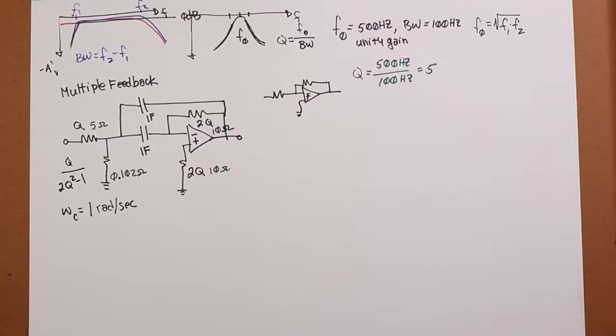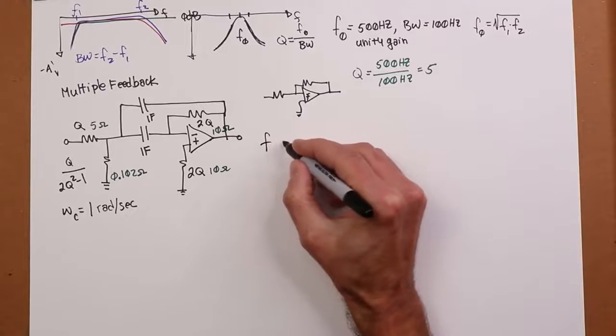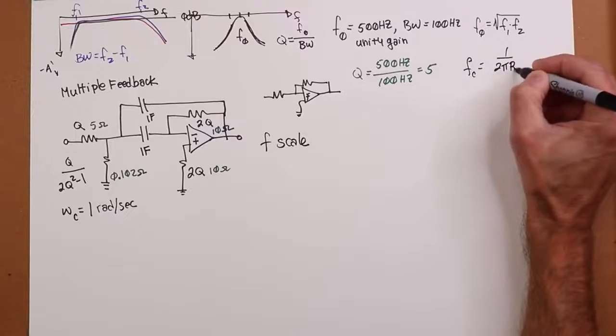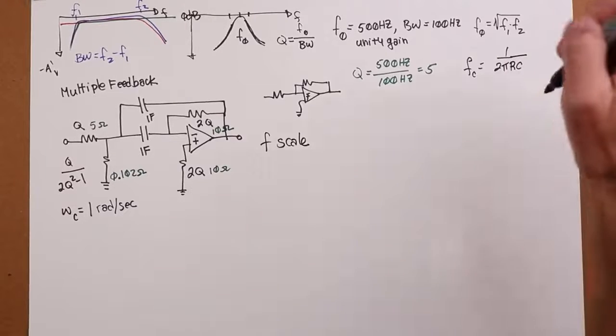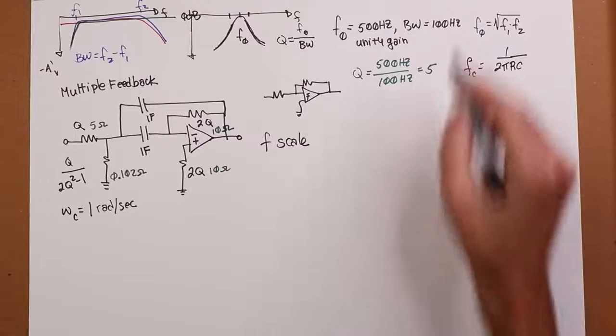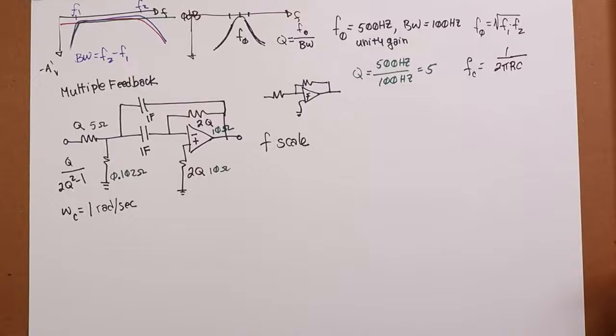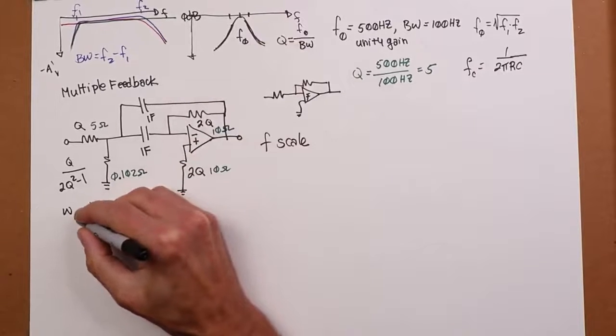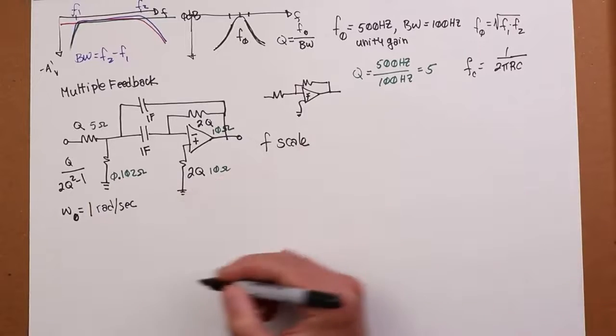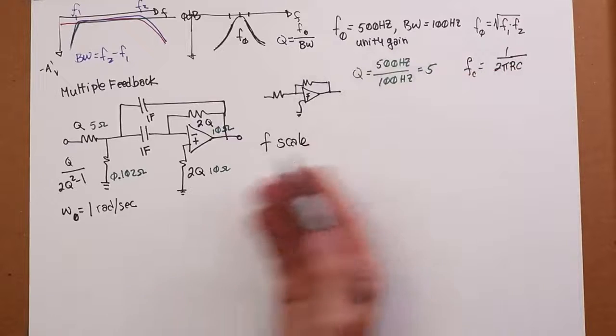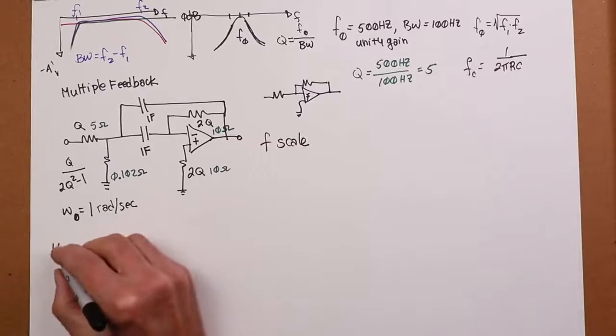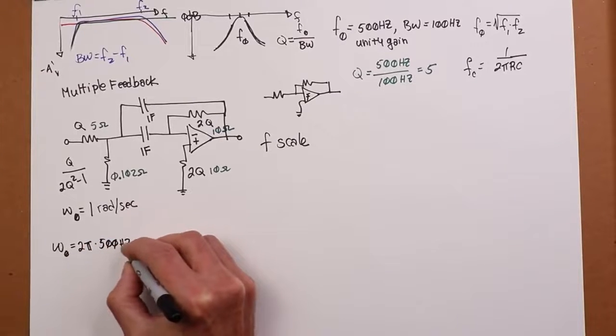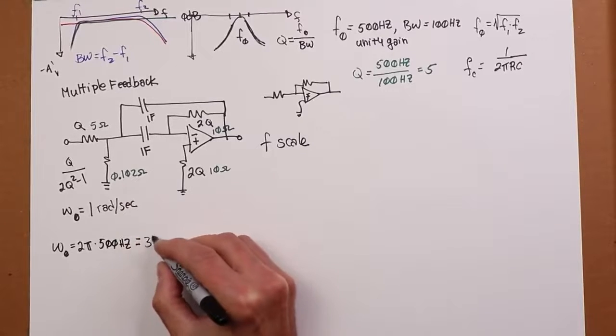So, just as we did before, we have to do a frequency scale. And remember how we do that. Critical frequency is 1 over 2 pi RC. So, we pick either r or c. We drive that down by an appropriate factor to drive fc up by that same factor. So, what is the factor that we need? Well, we have an omega here. If you want to be consistent here, let's call this omega 0. We have that at 1 radian per second. So, we need 500 hertz. And of course, omega is 2 pi f.